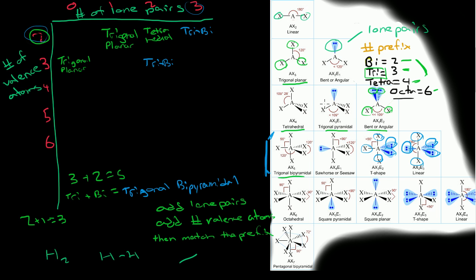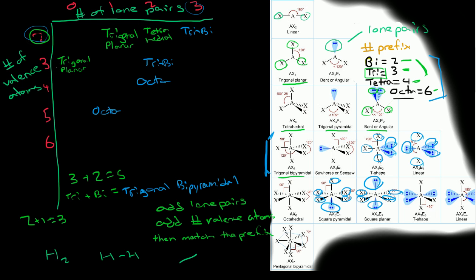Now what about octa? If we have 5 valence atoms and 1 lone pair, the total is 6, and we write that as octa — octahedral. Does it also work for 2 lone pairs and 4 valence atoms? Yes, 2 plus 4 equals 6, so that's octahedral as well. All you have to do is add them and find the prefix, knowing that octa corresponds to 6 here.